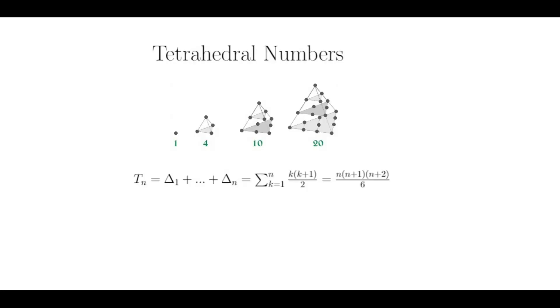Cubic numbers are simple. They're just positive integers raised to the third power. So I get 1, 8, 27, 64, etc. So I like to focus on the tetrahedron numbers.